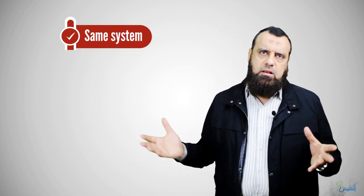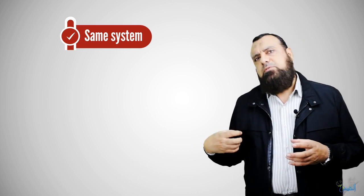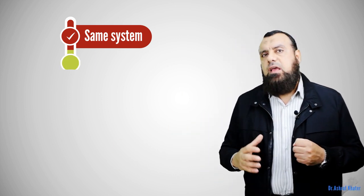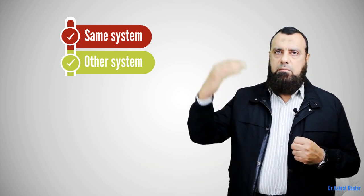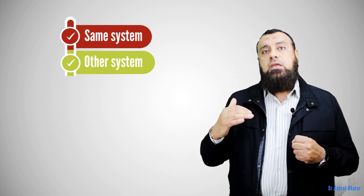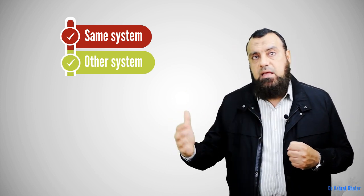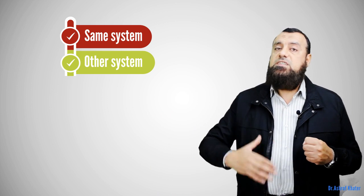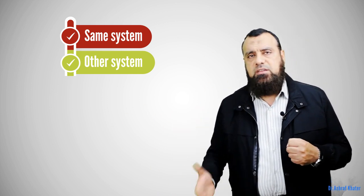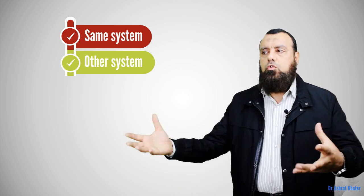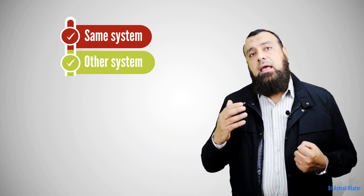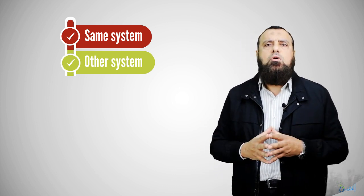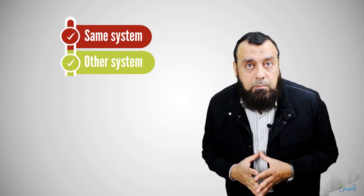We also ask about symptoms of the same system. For example, if speaking about the breast, we ask about breast pain and breast discharge. We review other systems: GIT symptoms upper and lower, the hematologic system including symptoms of anemia, bleeding tendencies, and recurrent infections, the musculoskeletal system, and CNS symptoms including increased intracranial tension, cranial nerve, motor or sensory symptoms, up to the menstrual history.